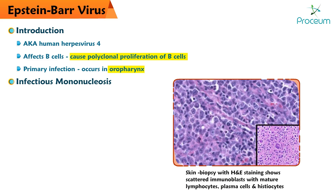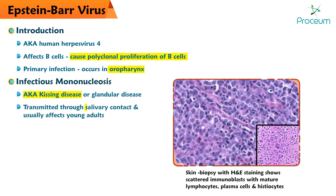Infectious Mononucleosis. Epstein-Barr virus is the most common cause of infectious mononucleosis. It is also known as kissing disease or glandular disease. It is transmitted through salivary contact and usually affects young adults.